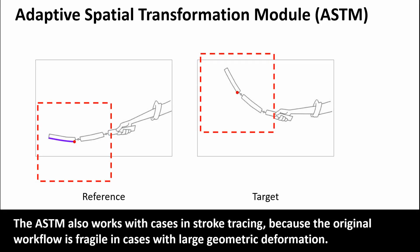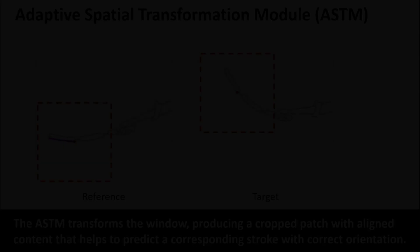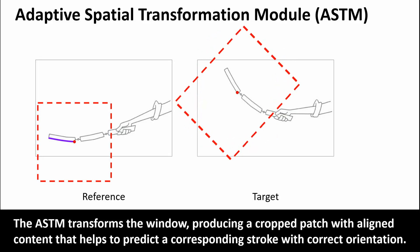The ASTM also works with cases in stroke tracing because the original workflow is fragile in cases with large geometric deformation. The ASTM transforms the window, producing a cropped patch with aligned content that helps to predict a corresponding stroke with correct orientation.